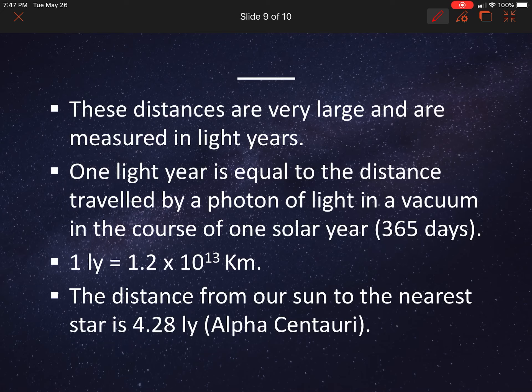So these distances, they're so huge. They're measured in what's known as light years. You can copy that down. So one light year is equal to the distance traveled by a photon of light in a vacuum in the course of one solar year. It's kind of a big definition there. So we know that one light year is equal to 1.2 times 10 to the 13 kilometers.